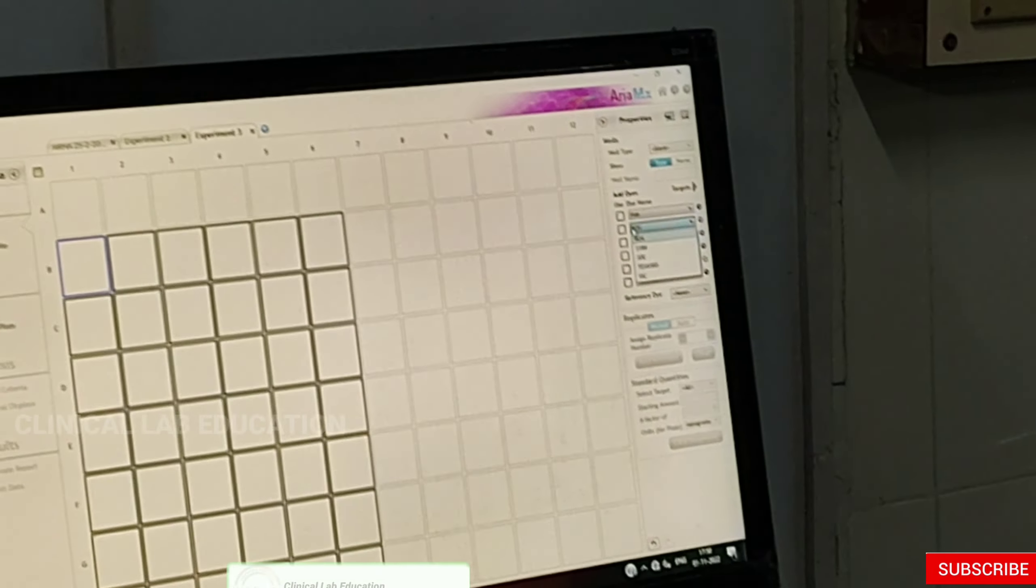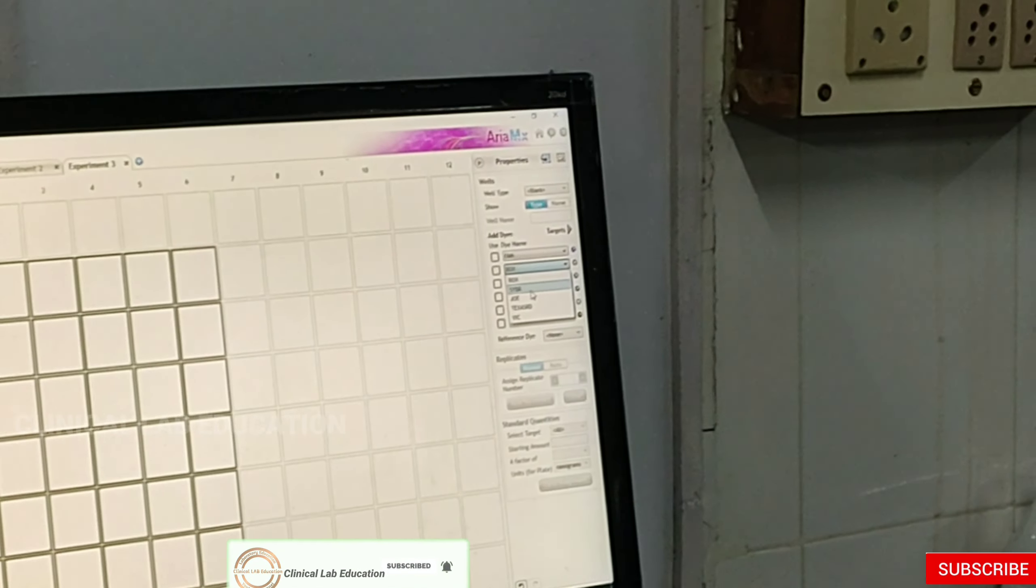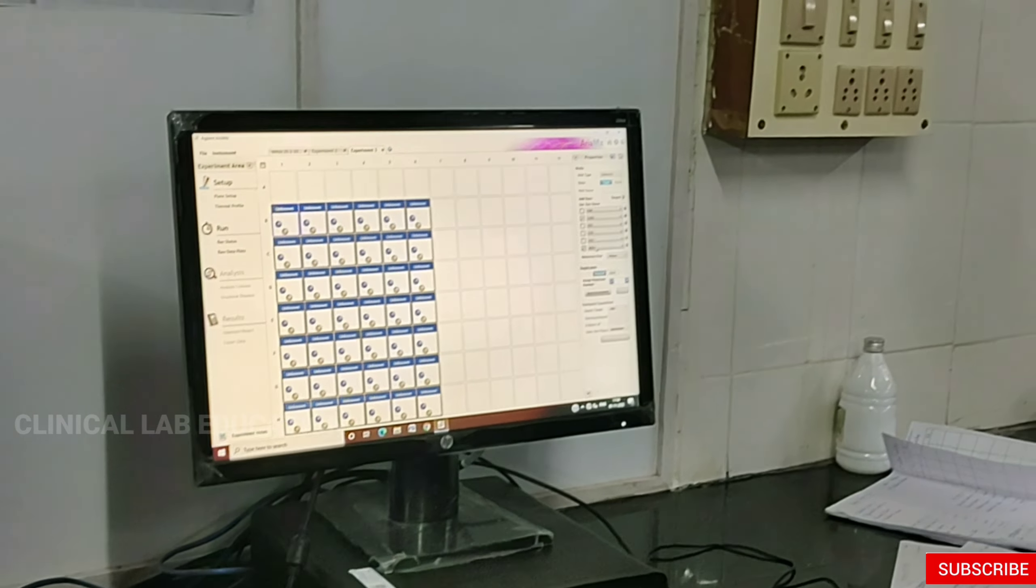To this you can add ROX. Here also SYBR is there. If you select SYBR here, you need to select ROX here. Either way, you can just put it manually. Here we are always using both.